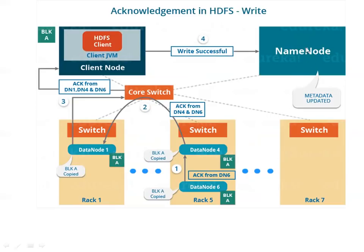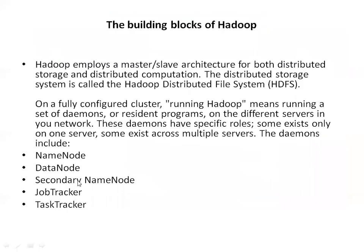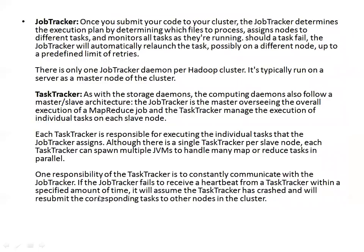The NameNode consists of components like the JobTracker — a program running behind it. In the next class, we will learn in detail about FS Image, Edit Logs, and the Secondary NameNode, JobTracker, and TaskTracker. Today I introduced what is HDFS, the NameNode, DataNode, and the Google File System architecture. Next class we will cover configuration and more about these building block components.